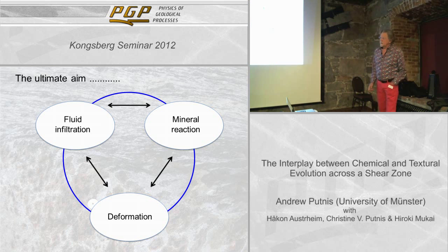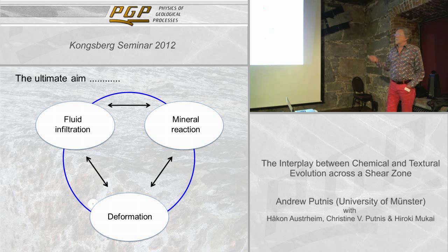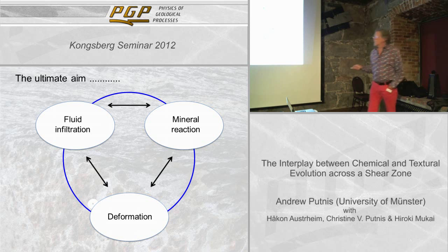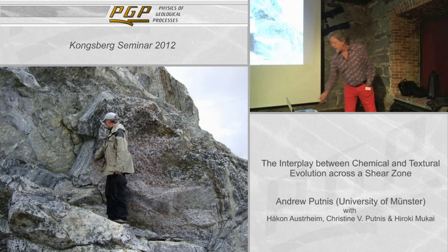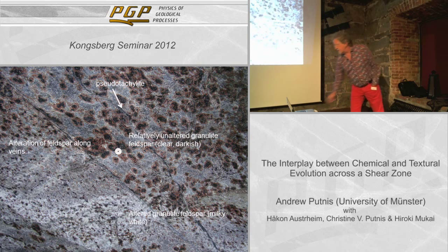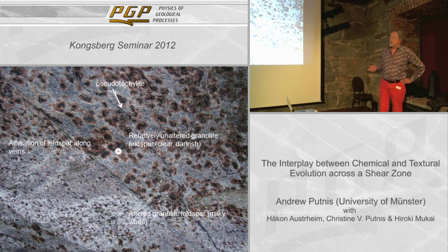What we're looking at is effectively the root zone in the crust of what was a big mountain belt. So by studying what's going on here, in terms of what's frozen in and what structures we see, it might give us some insights into the sorts of things that may be happening under, say, the Himalayas today. That's the ultimate aim — everybody would love to know how these feedbacks work between fluid infiltration, mineral reaction, and deformation, how strong the rock is, and when you get rock weakening.